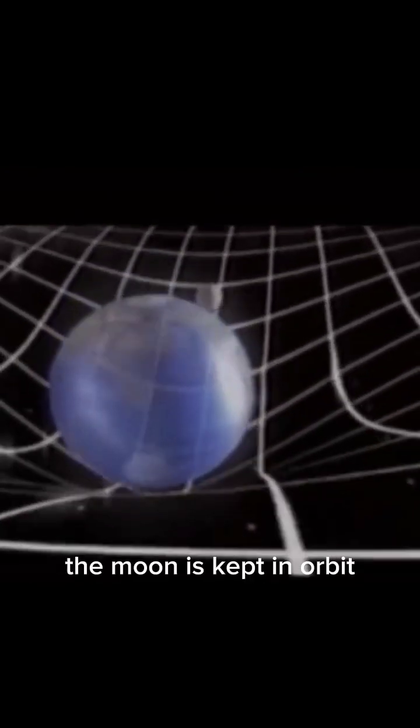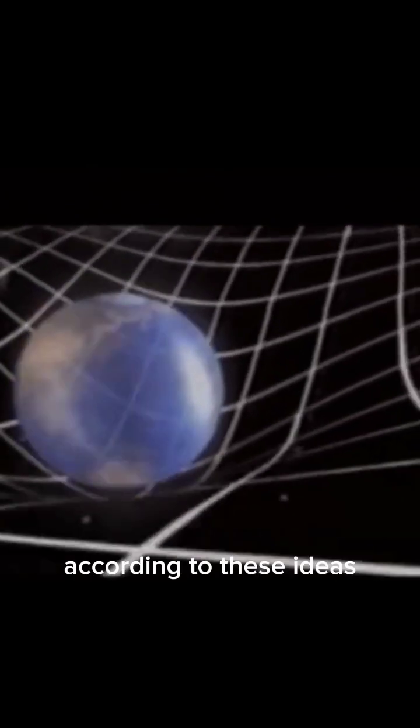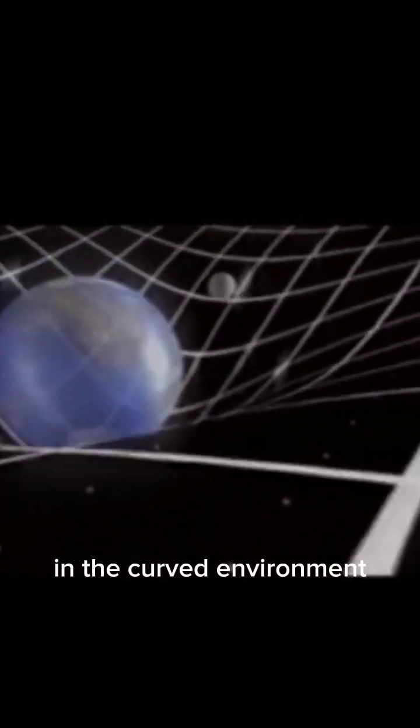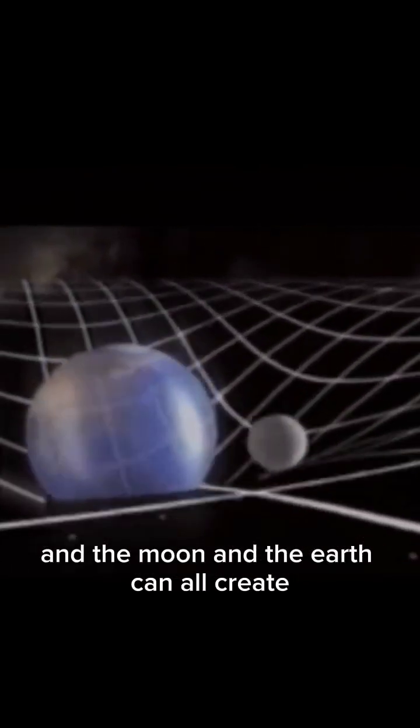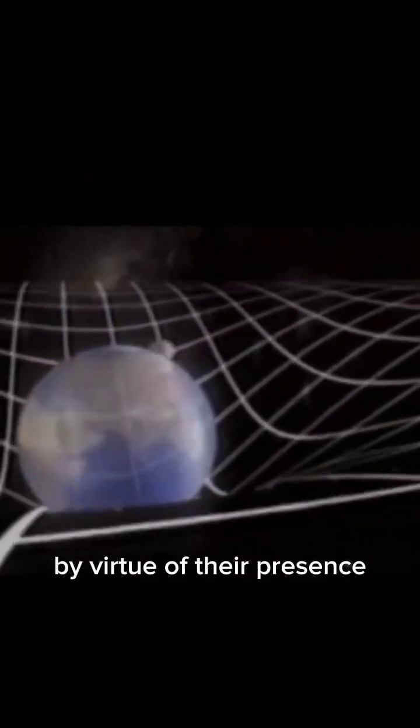Now look at the moon. The moon is kept in orbit according to these ideas because it rolls along a valley in the curved environment that the sun and the moon and the earth can all create by virtue of their presence.